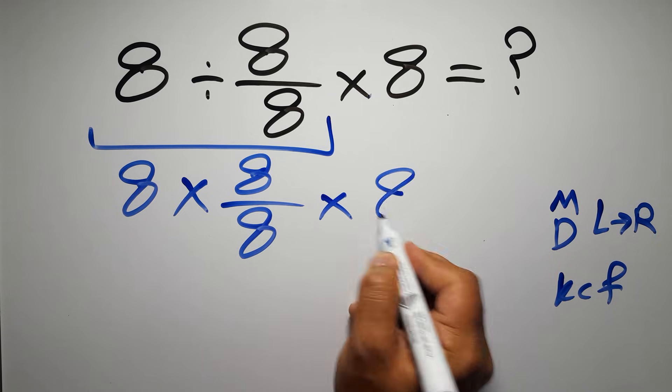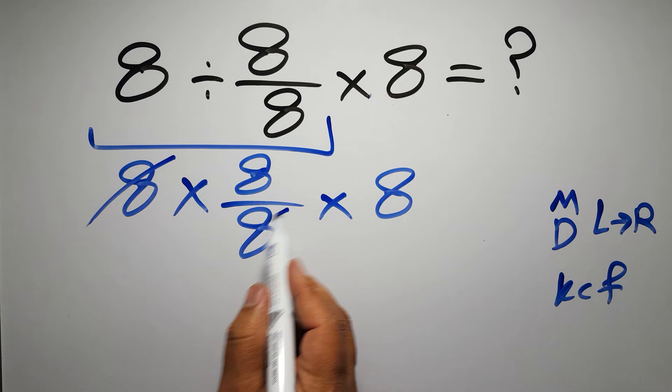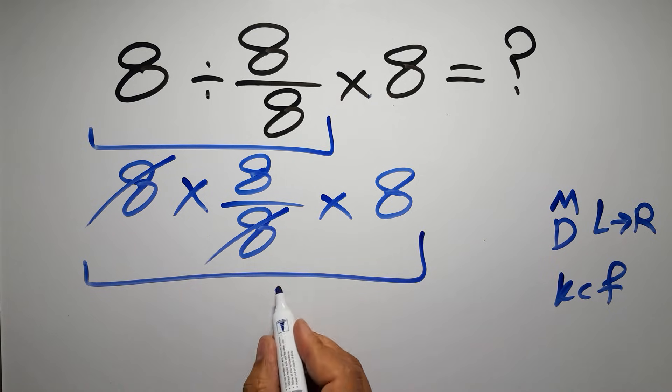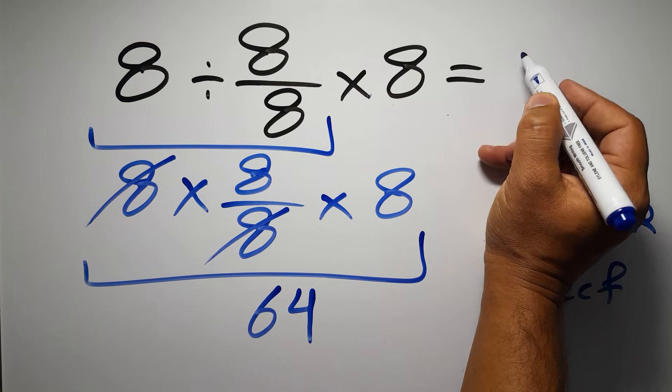Then times 8. We can easily cancel this 8 and this 8, so we have just 8 times 8, which gives us 64, and this is our final answer to this problem. The correct answer is 64.